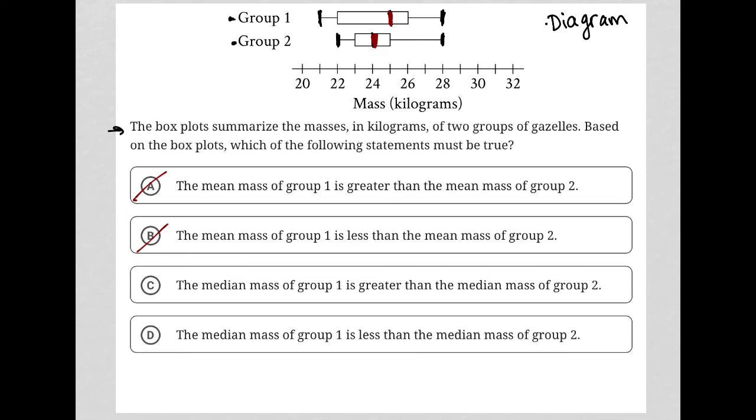Choice C: the median mass of group one is greater than the median mass of group two. Absolutely yes, right? Because that line that I highlighted in red or traced in red represents the median. And for group one, it is larger than in group two. So that must be the correct answer.